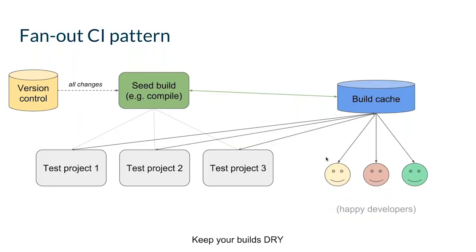Briefly, here's how Gradle's CI works — this is a simplified diagram. We have a concept called a seed build, which compiles everything: things for test execution for CI itself, and also things that only developers might need even if CI doesn't. The reason is to populate the build cache with all those outputs so that developers can keep their builds dry. This fan-out pattern is enabled by the build cache, and we'd recommend it if you're a build cache user.